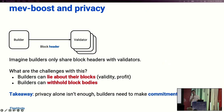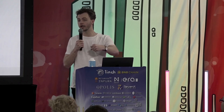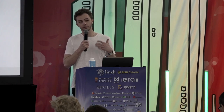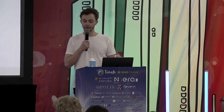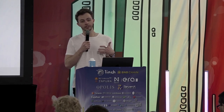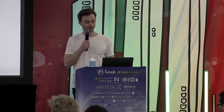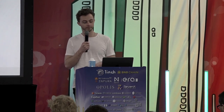But if builders are only sharing block headers with validators, you have another problem: validators don't know if they can trust builders. A block header doesn't tell you anything about the profit of a block or if it's valid. A builder could lie about the money the validator will get, or propose something incorrect on the network. And just because a validator signs a block header doesn't mean the builder will reveal the block body. You can't just have privacy — you need the builder to commit to certain blocks and make strong economic commitments about the blocks they're proposing to validators.